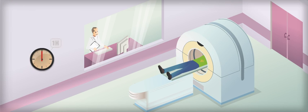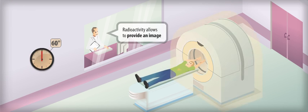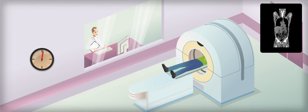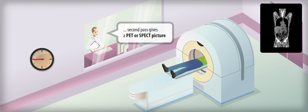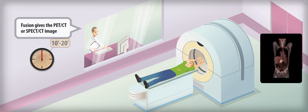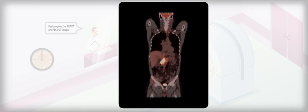The patient is then transferred into the camera. Radioactivity allows to provide an image. First pass gives an x-ray picture, and second pass gives a PET or SPECT picture. Fusion gives the PET CT or SPECT CT image.